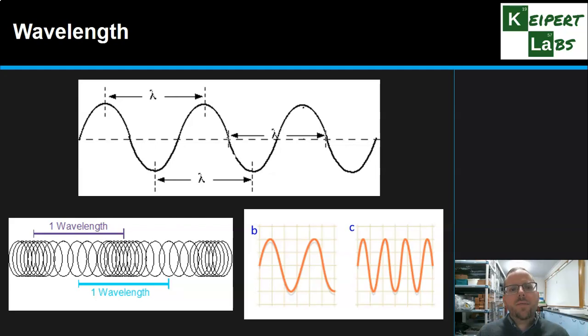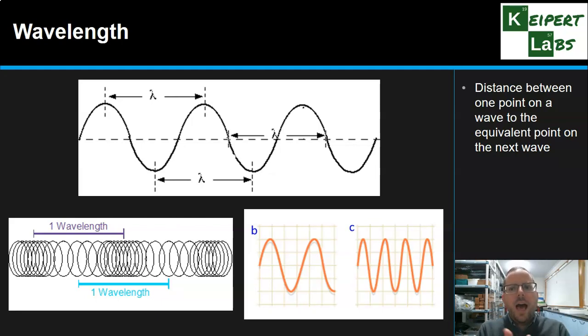Secondly, we're now going to look at wavelength. What about if we're looking at distance along a wave? The wavelength is the distance between one point on a wave, and to the equivalent point on the next wave. The top of one wave to the top of the next wave. The bottom of one wave to the bottom of the next wave. The midpoint of one wave to the midpoint of the next wave.